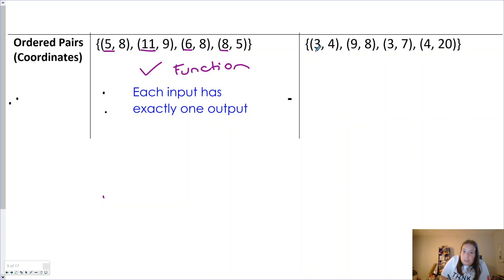So here we have (3,4), (9,8), (3,7), and (4,20). And we see that this is not a function. 3 has 2 outputs, 4 and 7. No good.